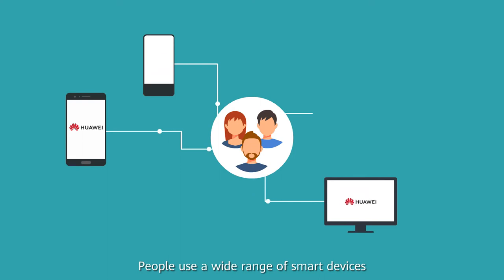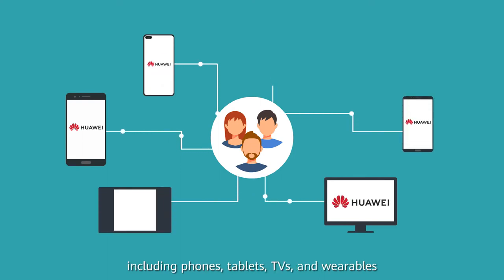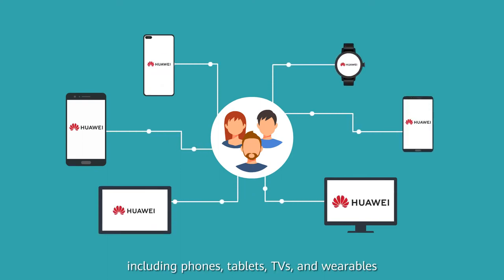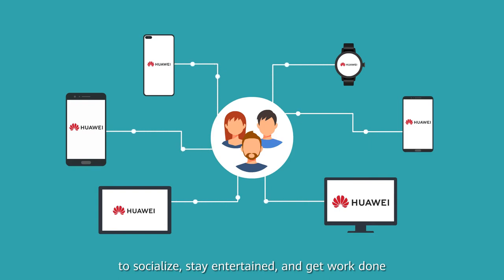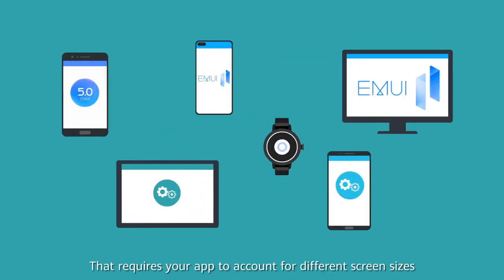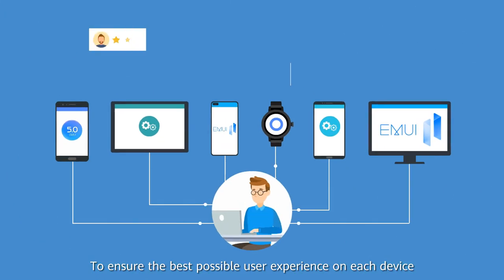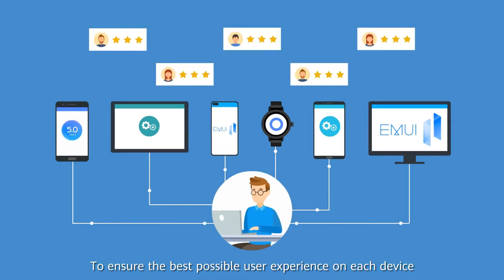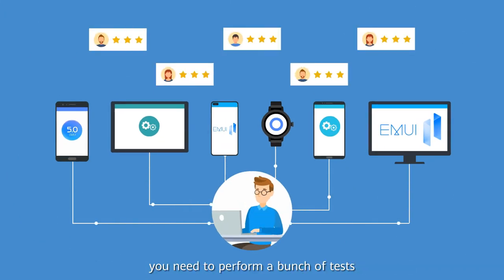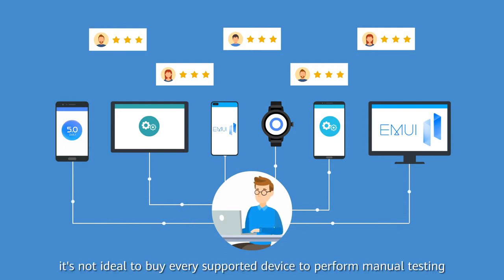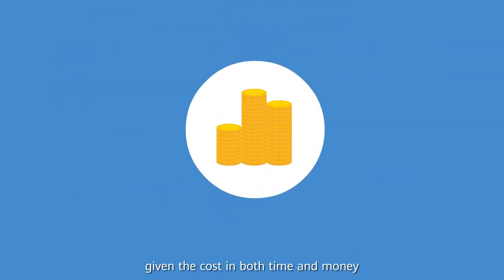People use a wide range of smart devices, including phones, tablets, TVs, and wearables to socialize, stay entertained, and get work done. That requires your app to account for different screen sizes and operating systems on devices. To ensure the best possible user experience on each device, you need to perform a bunch of tests. It's not ideal to buy every supported device to perform manual testing, given the cost in both time and money.